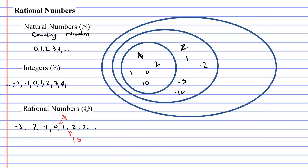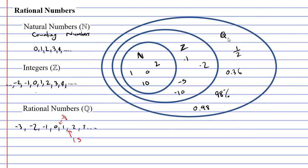I now have another oval shape, and this time I'm going to use the Q symbol, which stands for my rational numbers. In this oval I'm going to start putting things that are not whole numbers, such as one half, 0.36, even my percentages, such as 98%. By the way, 98% is not a whole number — that's actually the same as writing 0.98. When I look at this outer oval representing my rational numbers, I can see I have fractions, decimals, percentages. It even includes the integers, the negative numbers, as well as the natural numbers — my positive whole numbers and my 0.